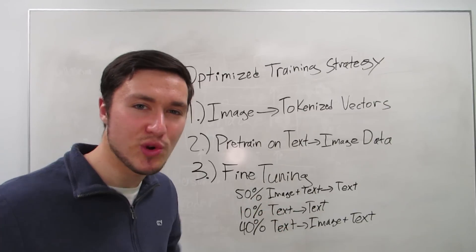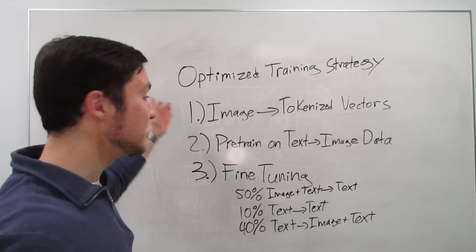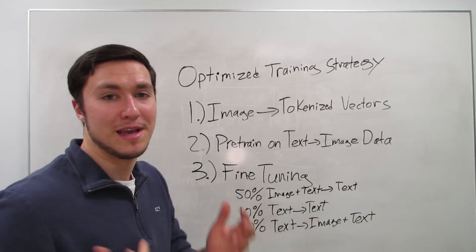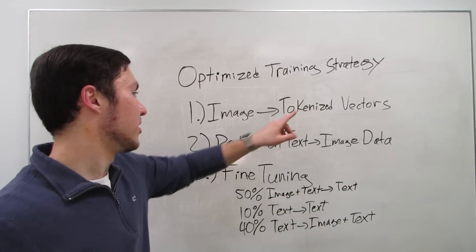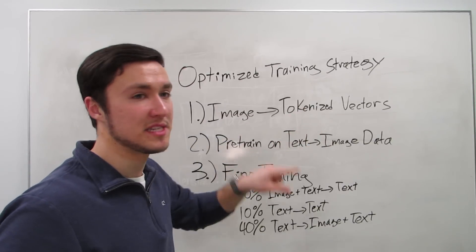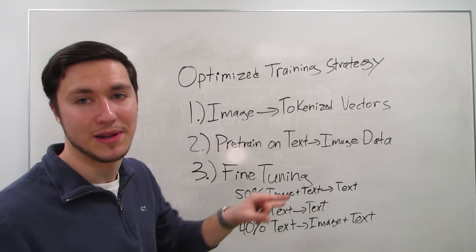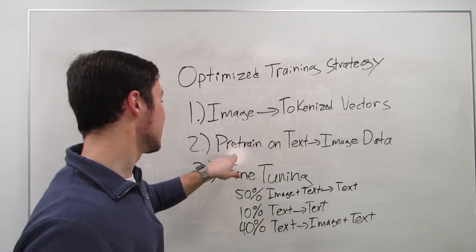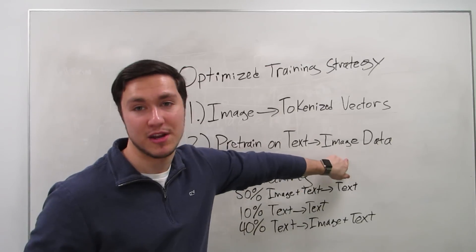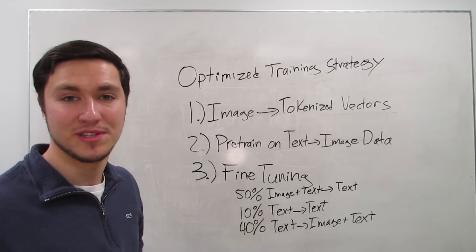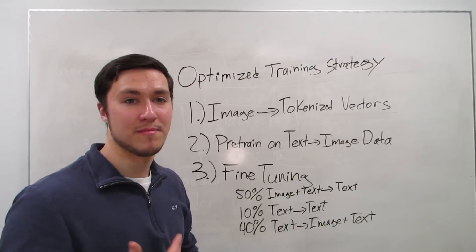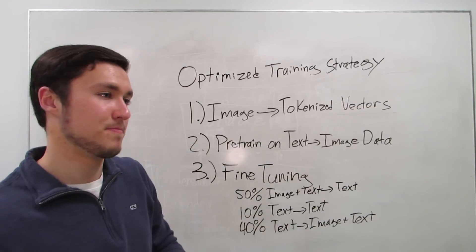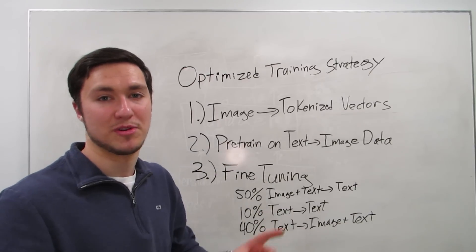So how did DeepSeek actually train a model like this? There were three steps. First, they converted images into tokenized vectors so the model can mathematically work with them — tokenization means taking specific portions of the image, similar to how we take specific words from a sentence and convert them into vectors. Then, with those tokenized vectors, they pre-trained the model on text-to-image data so the large transformer could learn how text relates to images — how characters in text map to pixels in an image.